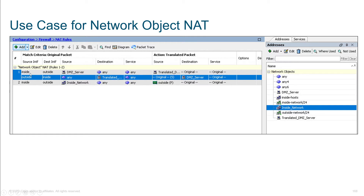See how the source will be changed when you go from inside to outside? Now from outside to inside, if traffic is coming from anywhere destined for my translated server, leave the source alone but change that to the DMZ server's internal address. The DMZ server is shown as a network object — this is the public IP, and this is the internal IP. So rule one includes both directions.